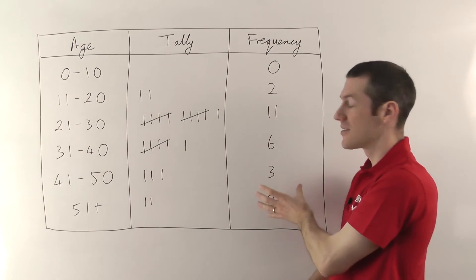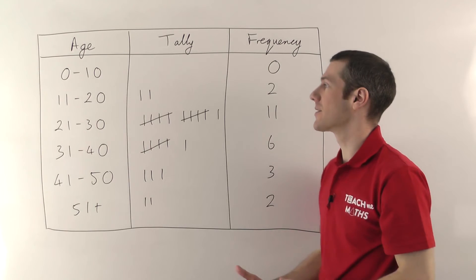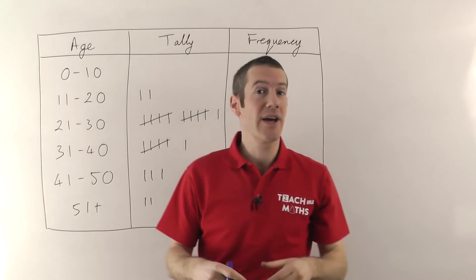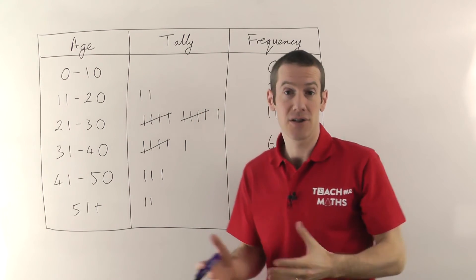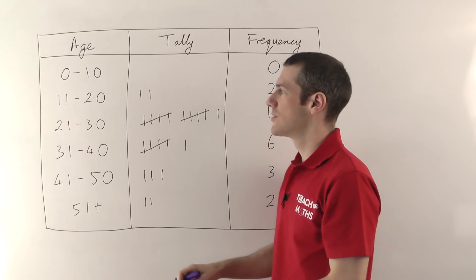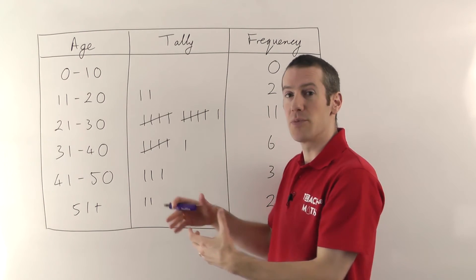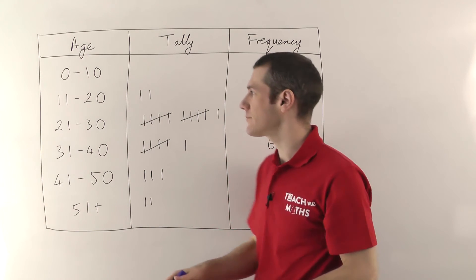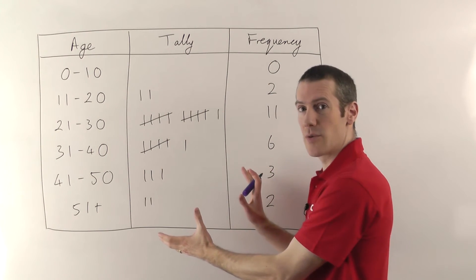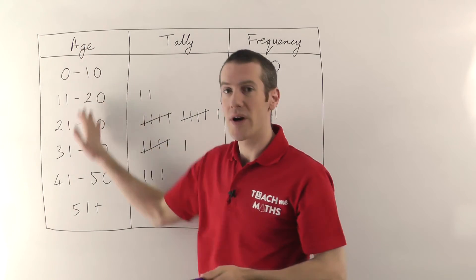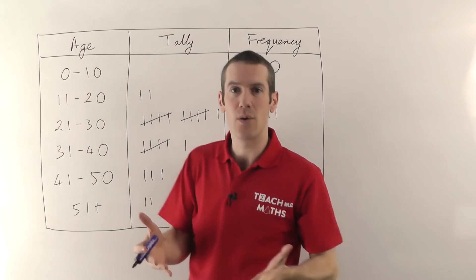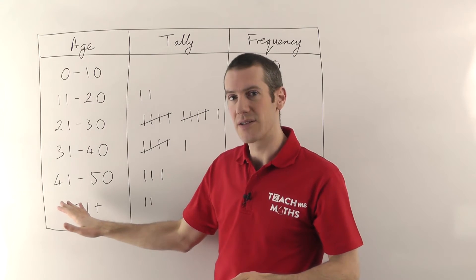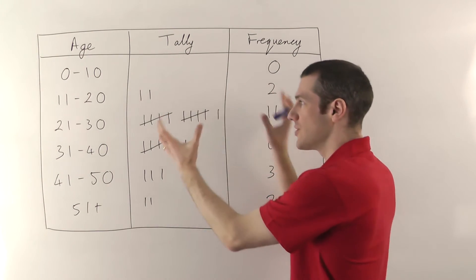Now if you get a question in a maths test, because sometimes they do ask this, to give a suitable table for collecting data from a questionnaire, then this is the table you want to draw. Now they'll give you the question so they'll say the question is how old are you, and they'll tell you what the possible answers are, and you have to use that to construct a table.